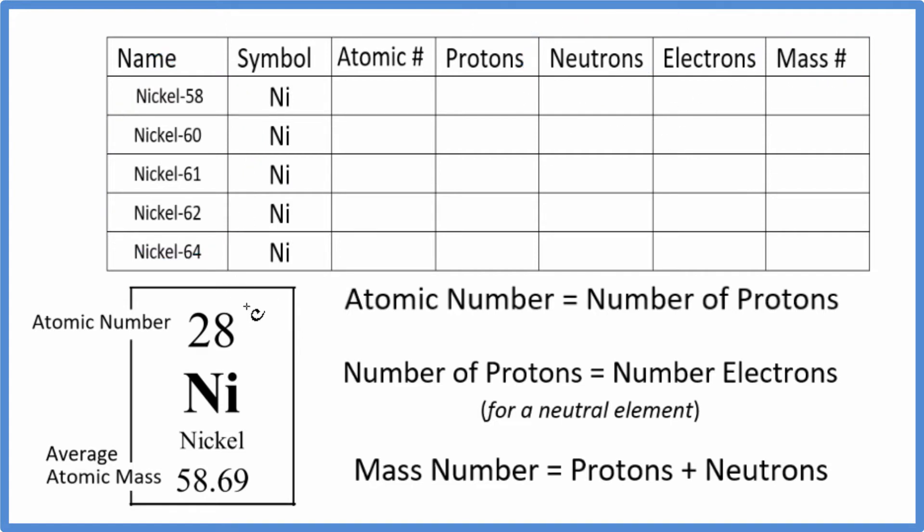So we'll start out by finding the atomic number. That's this number right here on the periodic table. The atomic number is 28. And that's the same for all of these isotopes. 28, it's nickel.